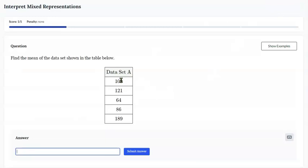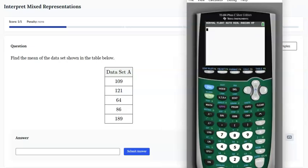This one asks you to find the mean of the set of data so you can either use your handheld TI-84 or you can use an online graphing calculator Desmos. Let's first take a look at the TI-84 since that's what you'll be using on your Regents exam.